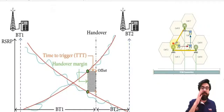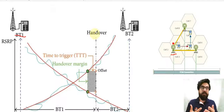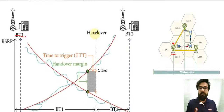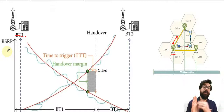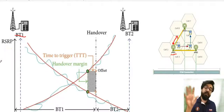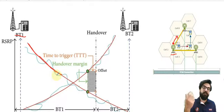First, imagine the UE is here, and eNodeB number one, or base station number one, is serving the UE. But the thing is that the UE is a mobile device and it can change its place. So maybe it goes here towards this border. And as the distance between a UE and eNodeB antenna increases, the power will decrease. And as the power received from the serving eNodeB decreases, power from a different eNodeB will increase.